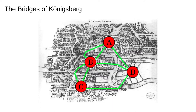Euler represented each landmass as a node — these are the circles labelled A, B, C and D — and each bridge crossing as an edge, the lines connecting them. The object consisting of nodes and edges is known to mathematicians as a graph. This has nothing to do with a plot of y against x; they just happen to share the same name. In these videos, graph and network mean the same thing, though I'll usually refer to networks instead of graphs.